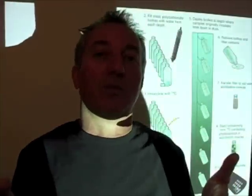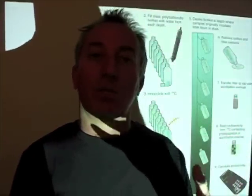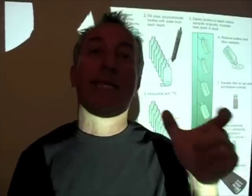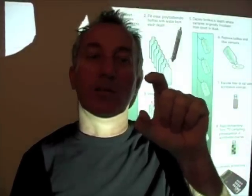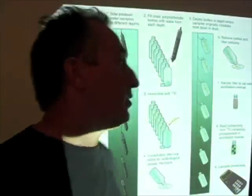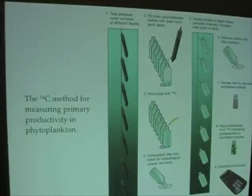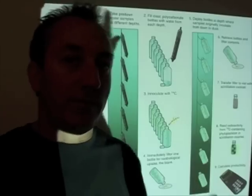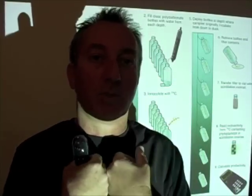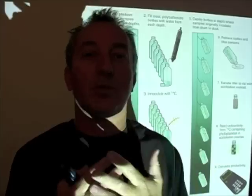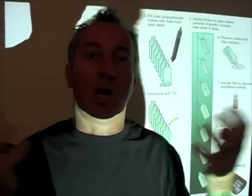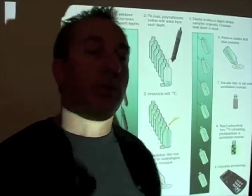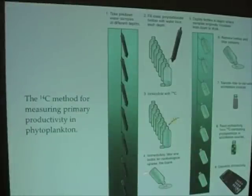When CO2 dissolves in seawater, it forms bicarbonate, so the form of C-14 added to each bottle is bicarbonate. One bottle is filtered immediately to establish a blank — to estimate non-biological uptake — because inorganic processes or sediments can automatically absorb carbon-14. That blank is then subtracted from whatever measurements we get from the rest of the samples.